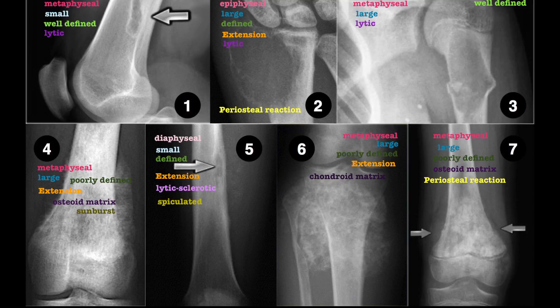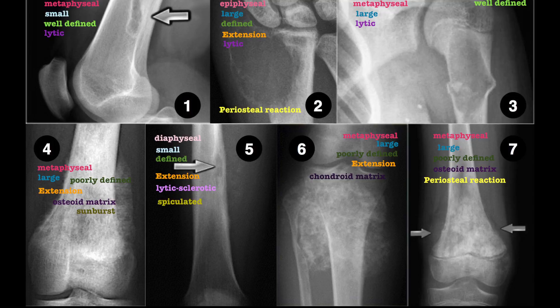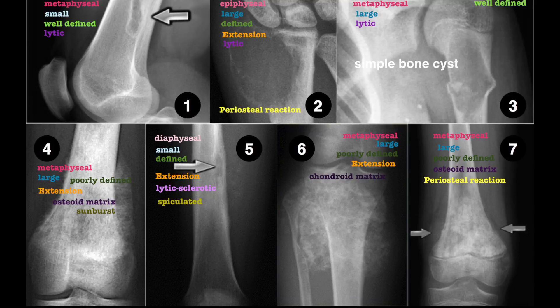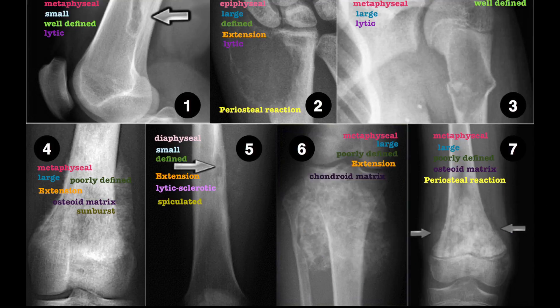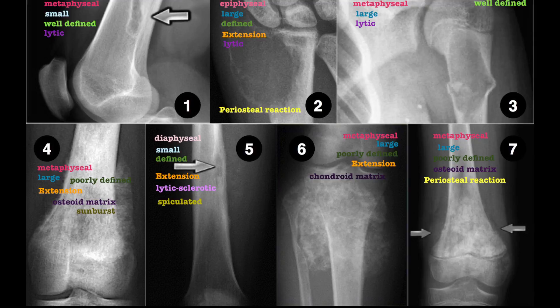As previously mentioned, the tumours in the top row are all benign. Benign tumours are well-defined, sclerotic, less extensive, and usually do not interrupt the periosteum. Figure 2 is an exception, as it is an aggressive type of benign tumour. Benign tumours are usually classified as latent, active or regressive. Tumour 1 is a non-ossifying fibroma, tumour 2 is a giant cell tumour, and lesion 3 is a simple bone cyst. The bottom row are malignant tumours — typically ill-defined, large, extensive lesions with a periosteal reaction. Figures 4 and 7 show an osteosarcoma, figure 5 shows a Ewing sarcoma, and figure 6 shows a chondrosarcoma.